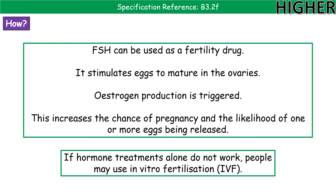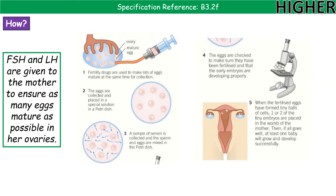If hormone treatments alone don't work, you go for a process called IVF — in-vitro fertilisation. The first step of IVF still involves hormones: we administer FSH and LH to the mother. FSH causes large numbers of eggs to mature at the same time, and then LH triggers ovulation at the right moment — since LH is what triggers ovulation. Once the eggs are deemed ready, a dose of LH is administered to cause ovulation to take place.